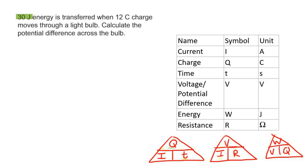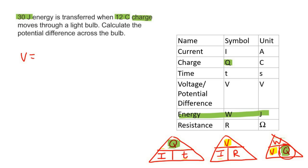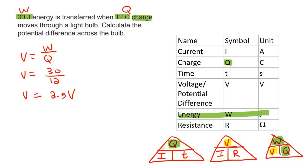Here we have 30 joules of energy — that's W. It is transferred when a 12C charge — so we have charge, which is Q. It moves through a light bulb. Calculate the potential difference — that's V. So this triangle we can use immediately. V is equal to the top of the triangle divided by the bottom — W over Q — so 30 over 12, which gives you 2.5 volts.